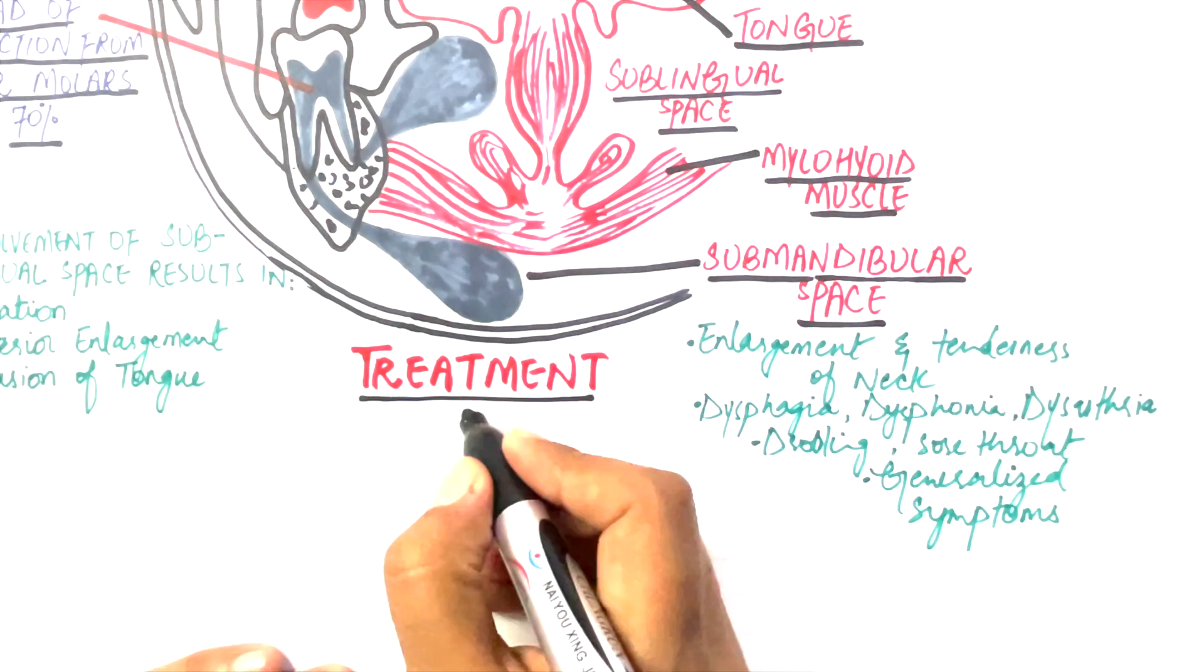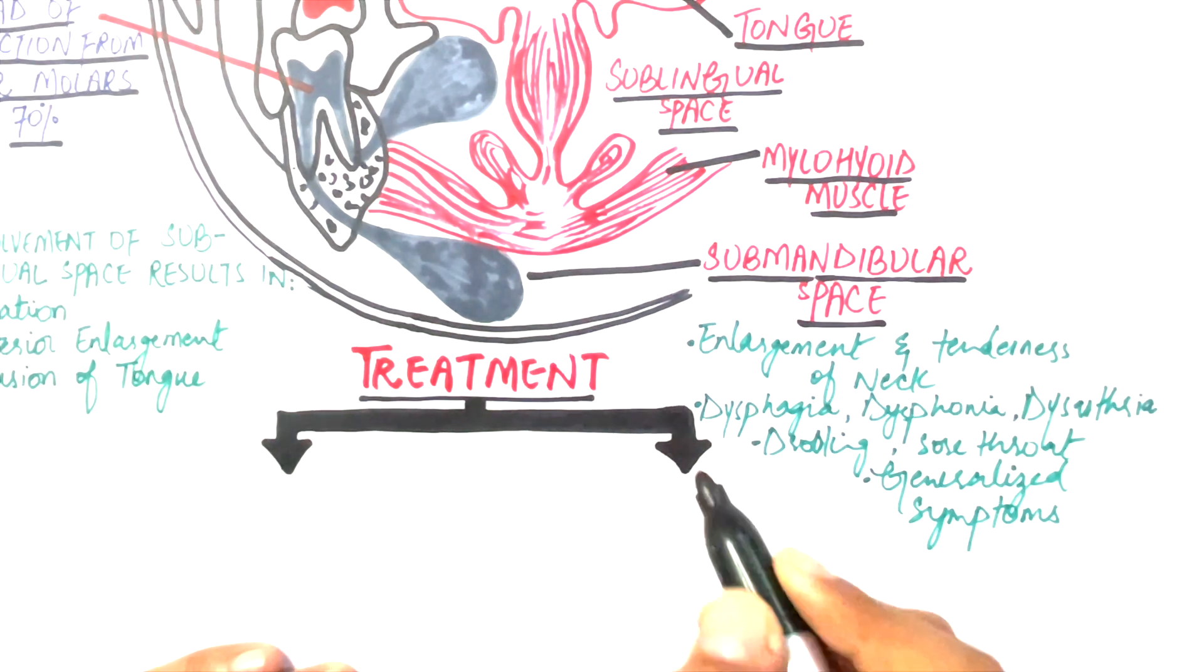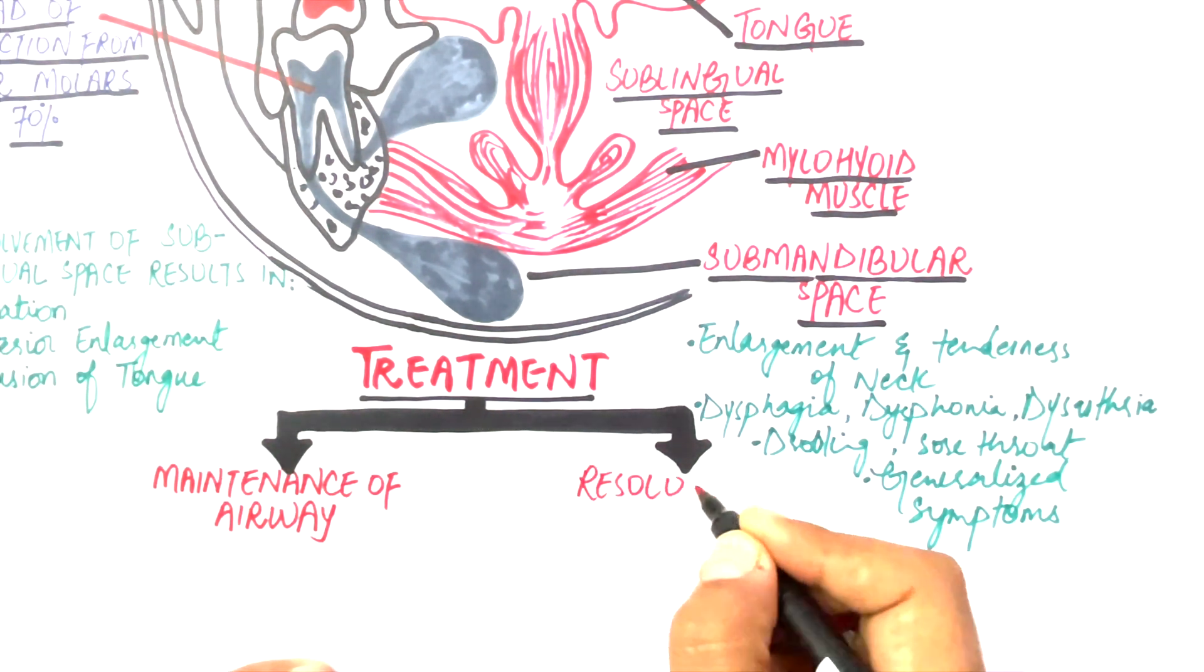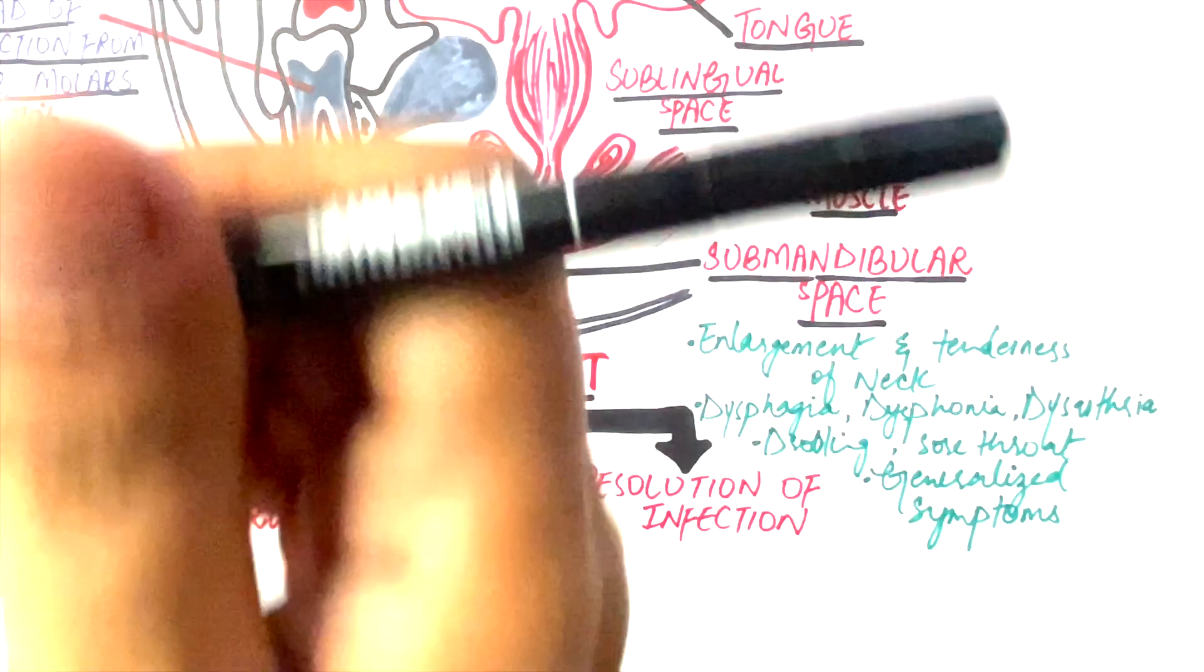Treatment of Ludwig's angina centers around two major priorities, which include maintenance of the airway and resolution of the infection with intravenous antibiotic therapy.